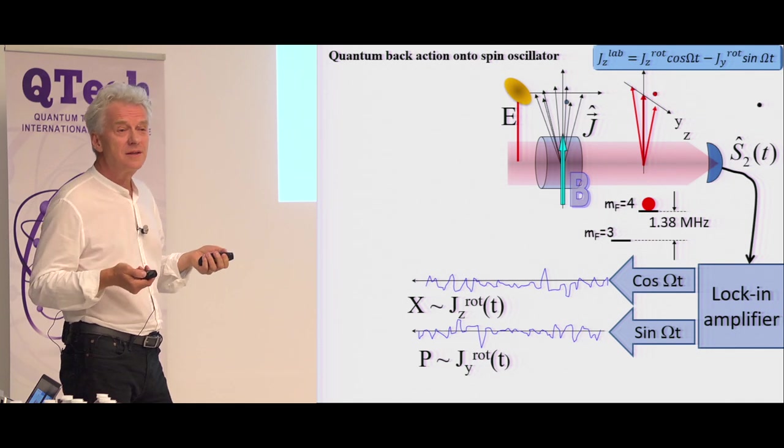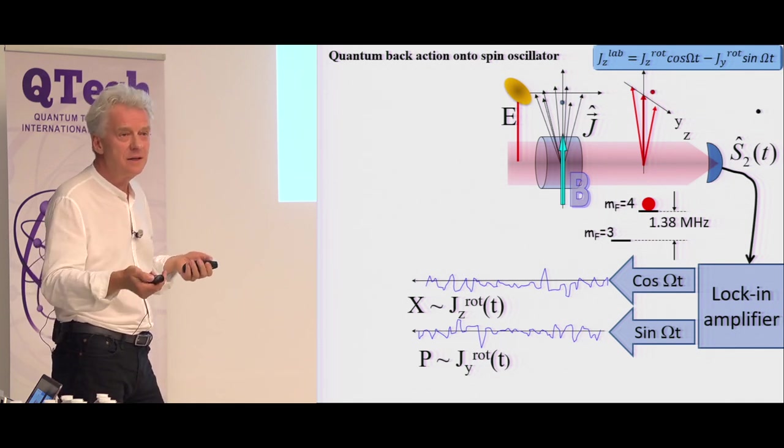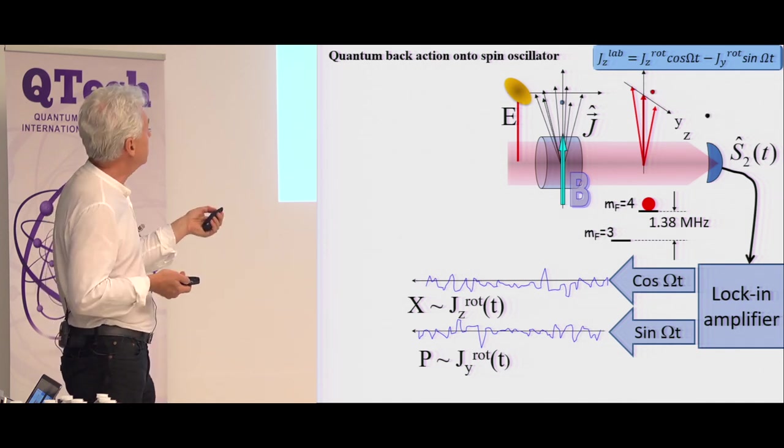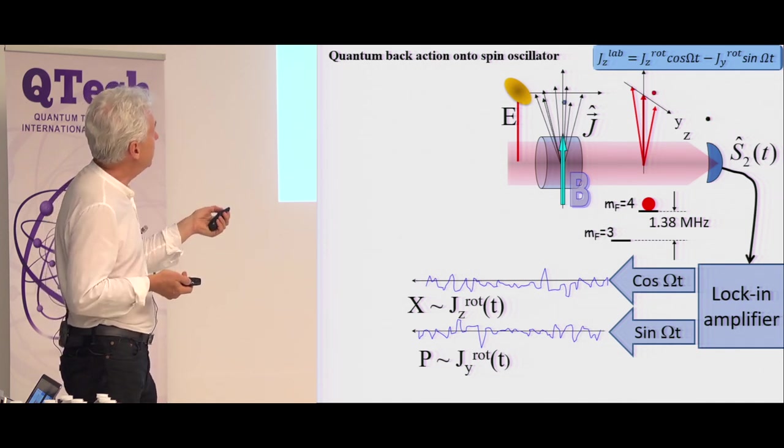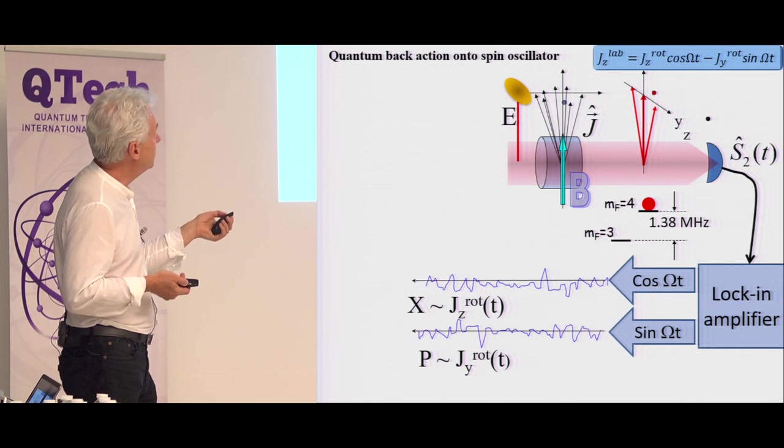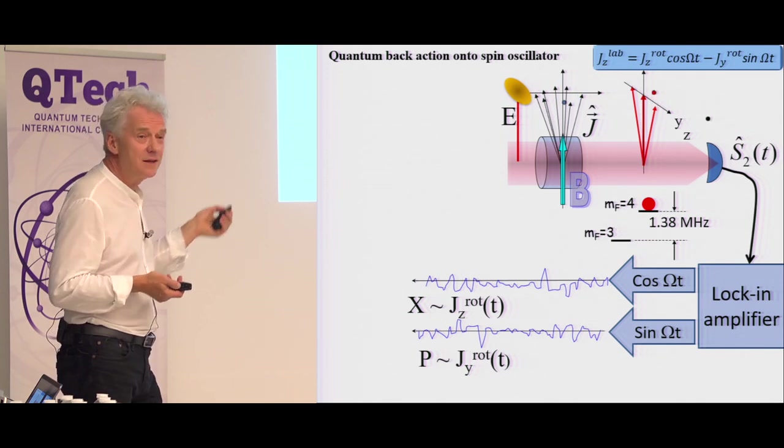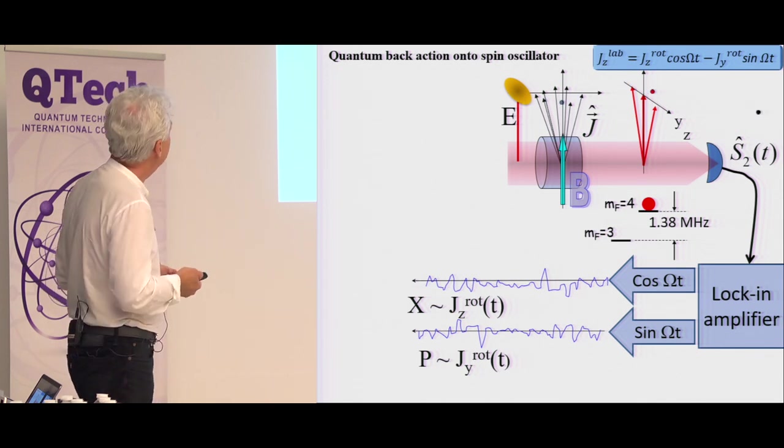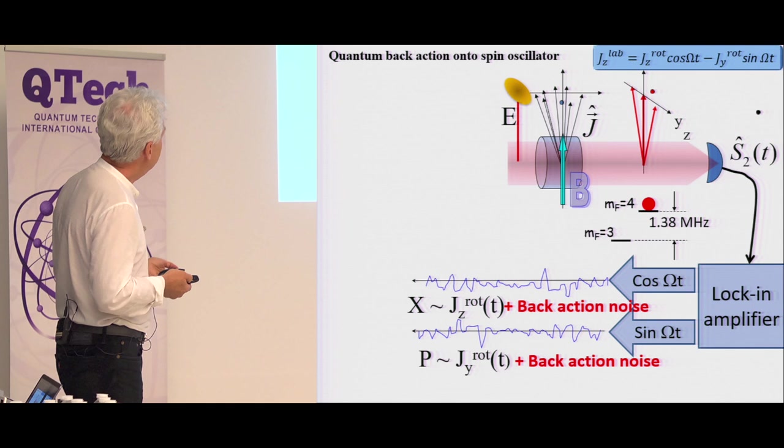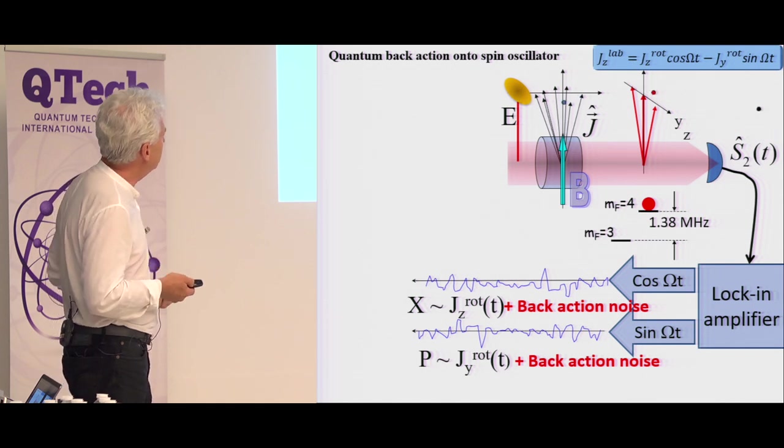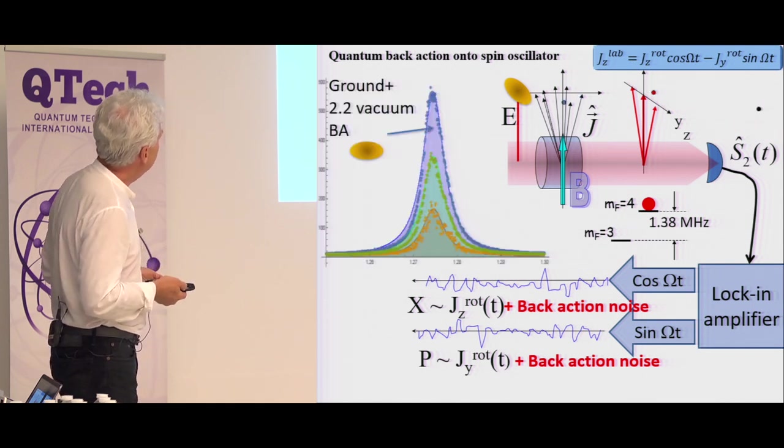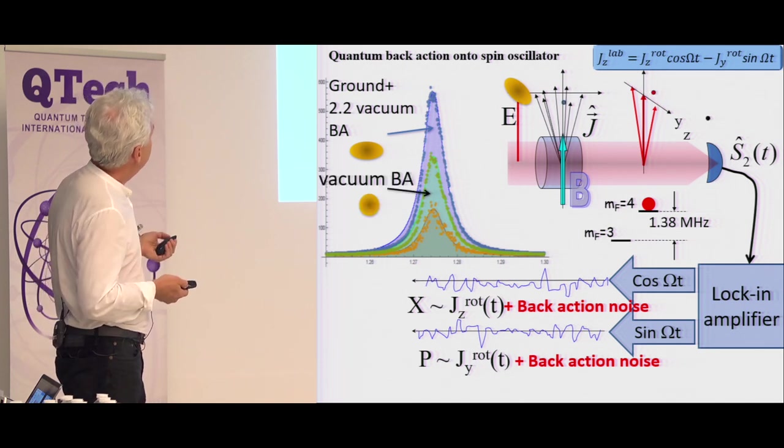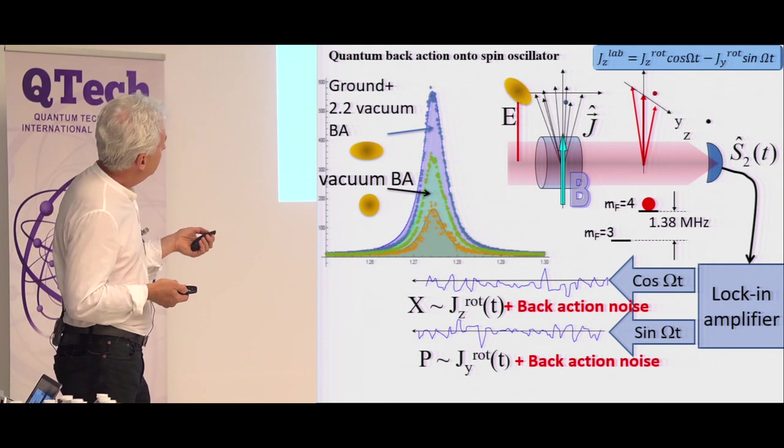But of course, if you are measuring this spin continuously, then as I told you in the first slide, you impose the back action. You measure this projection and then you put the back action on this projection. And since this thing continuously rotates, then you are just piling up the back action of the measurement. And here is the back action noise in both of those channels. And this is the experimental result.